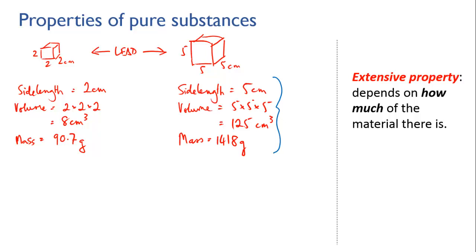But what our two blocks of lead do have in common, though, is density. Now you can work this out for yourself. Density is calculated as mass divided by volume. Pause the video and calculate the density for each block. What do you get?